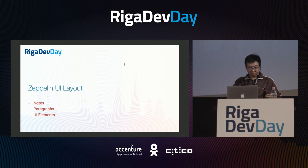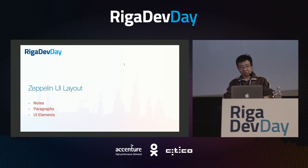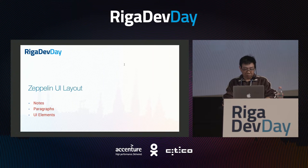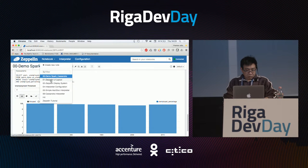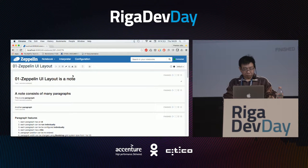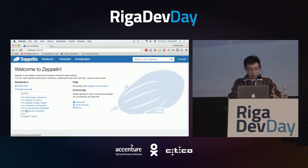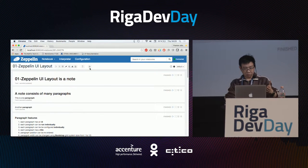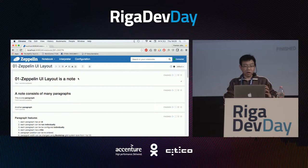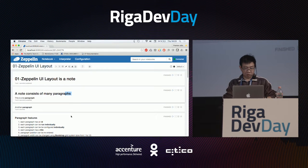Now let's focus on the layout of Zeppelin. Here is the main menu. When you choose a note, you can see it — a note has many paragraphs. This is one paragraph, this is another paragraph, another one, and so on.